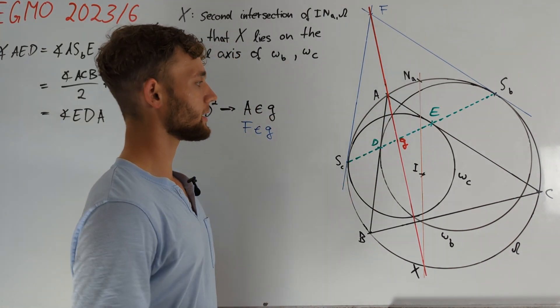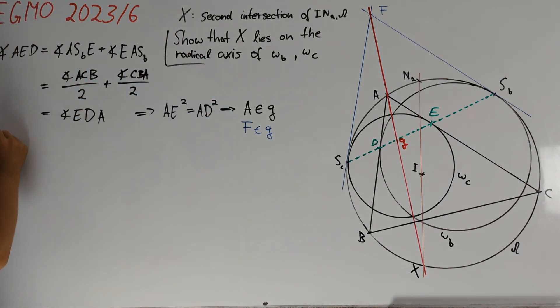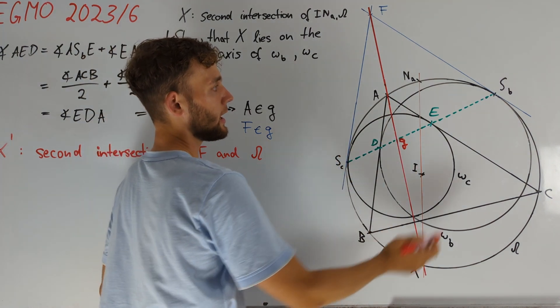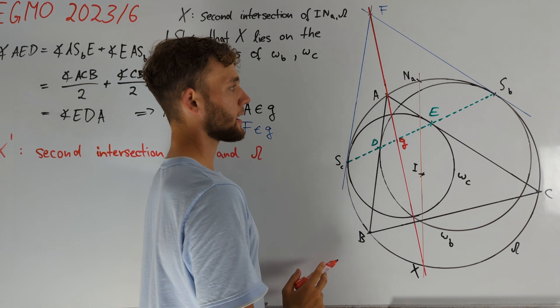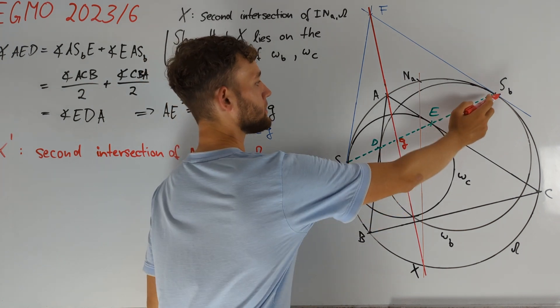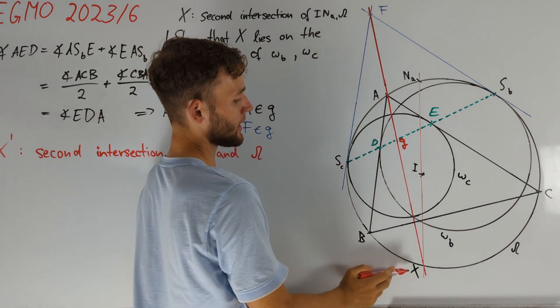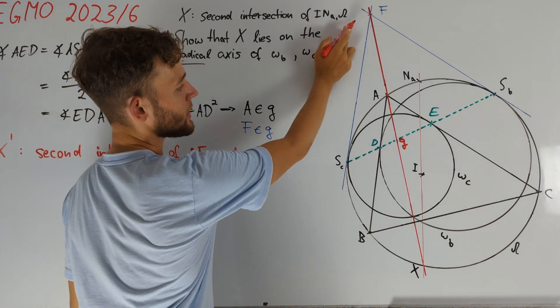Now, we immediately get a harmonic quadrilateral in the following way. Namely, if we define X prime to be the second intersection of line AF, which is G, with omega, then the points A, X prime and SB, SC are harmonic. This is simply due to the fact that the tangent lines at SB and SC of omega intersect on the line A, X prime.